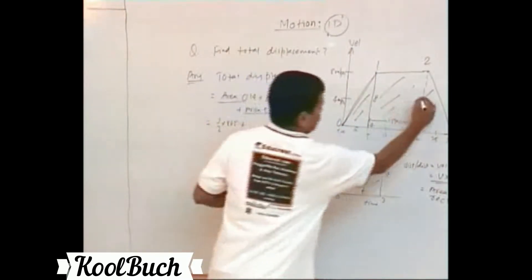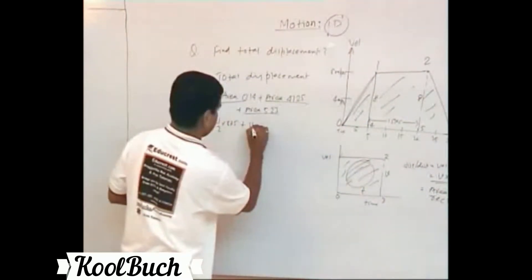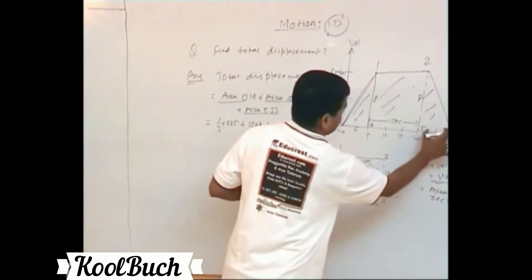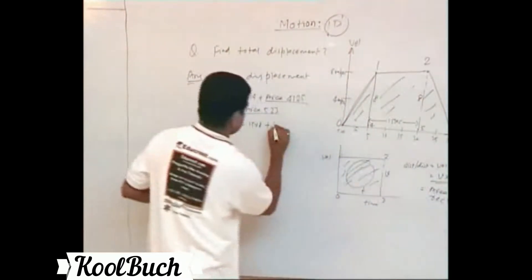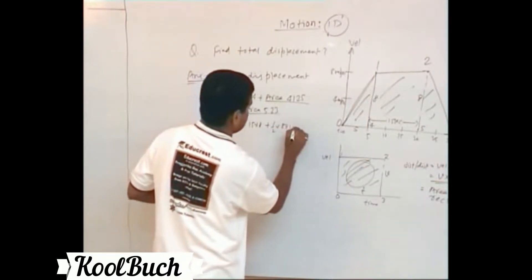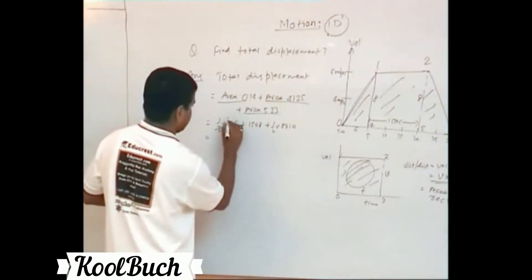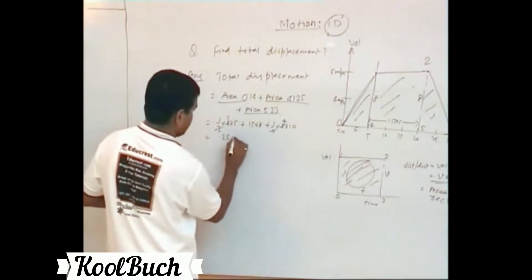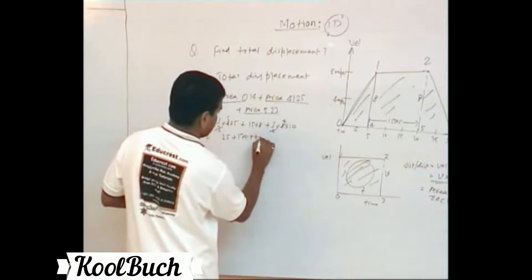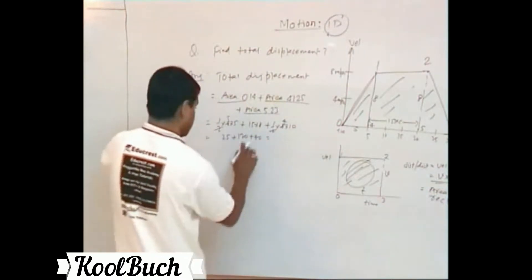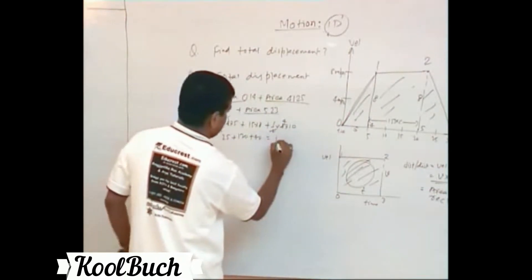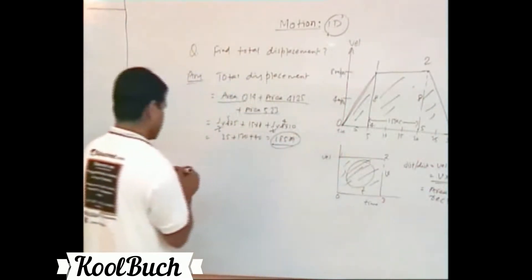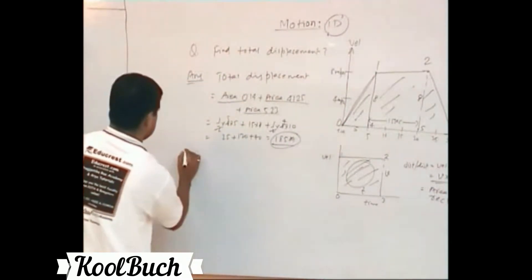For the triangle: half times height 8 times base 5 equals 20. For the rectangle: 15 times 8 equals 120. For the final triangle: half times 8 times 10 equals 40. So total displacement is 20 plus 120 plus 40, which equals 180... that is 25 plus 120 plus 40, which equals 185 meters.